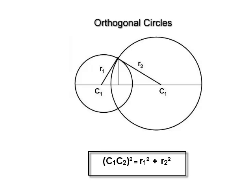Orthogonal circles: two circles with centers c₁ and c₂ and radii r₁ and r₂ intersect orthogonally if (c₁c₂)² = r₁² + r₂². The angle between two circles is the angle between the tangents to the two circles at the point of intersection. In the case of orthogonal circles, the angle between the tangents is 90 degrees.